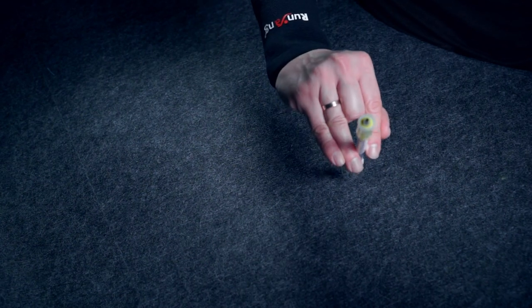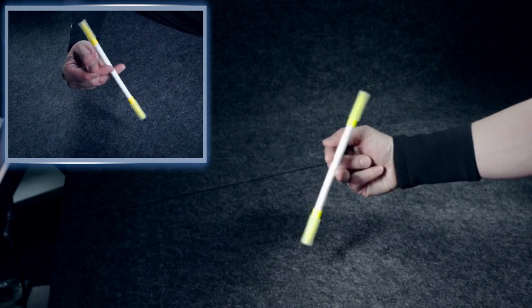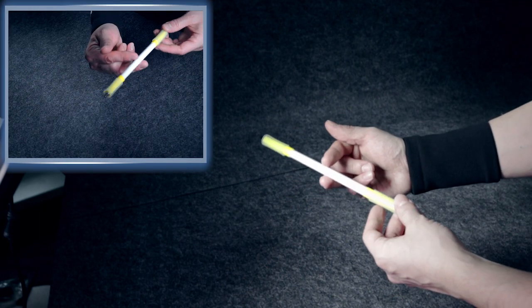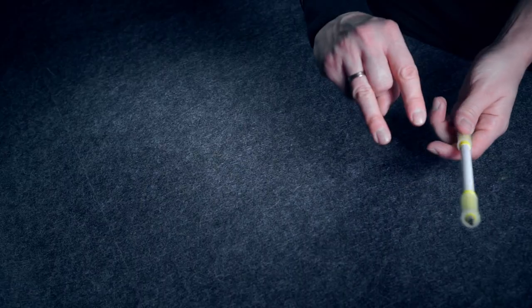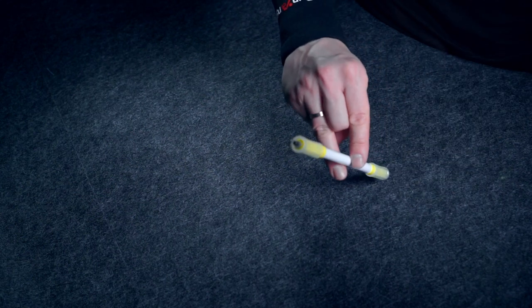Take your pen mod between index and ring finger and begin to sway it. Keep an eye on how you hold the pen. It should be between these two fingers and they should grab it by their tips.